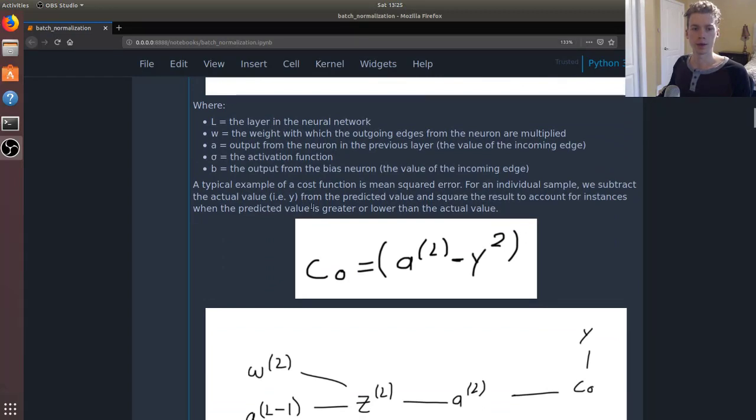A typical example of a cost function is the mean squared error. You can imagine a plot with a bunch of dots and then you want to figure out the best fitting line.